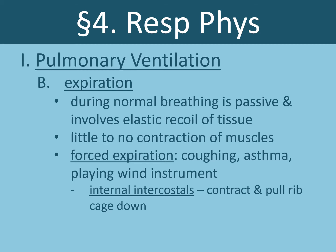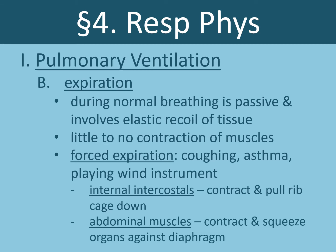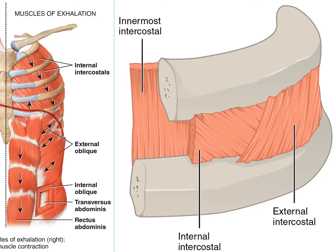These muscles include the internal intercostal muscles, which are found deeper than the external intercostals. When the internal intercostals contract, they pull the ribcage downward. Additionally, abdominal muscles contract during forced expiration. Abdominal muscles surround our abdominal cavity, and when they contract they squeeze on the abdominal organs. Those organs push upward on the diaphragm, lifting it back into place. The diagram to the left shows the direction the muscles take during contraction during expiration — you can see the internal intercostals pull downward on the ribcage, and the abdominal muscles contract and squeeze on the abdominal organs, pushing the diaphragm back up.